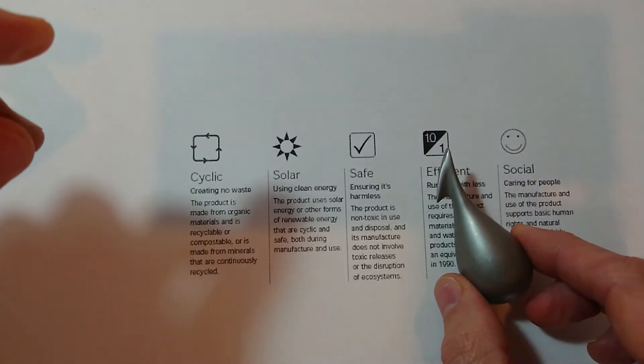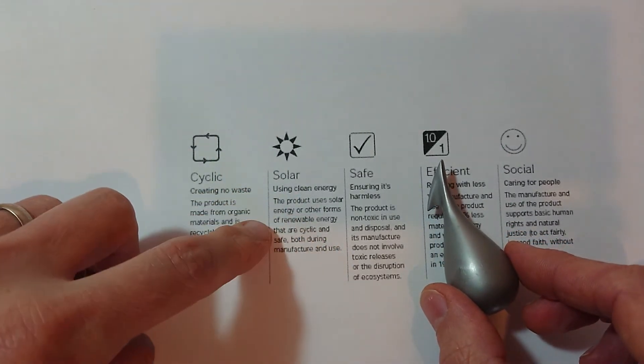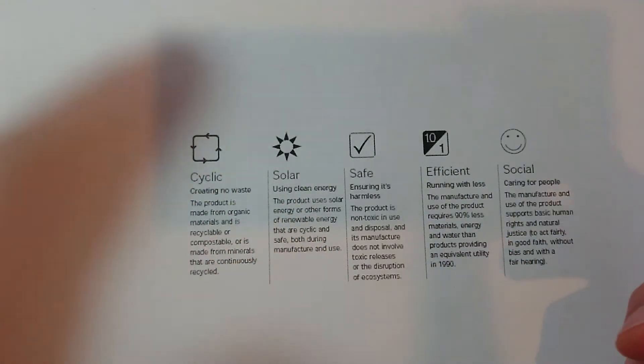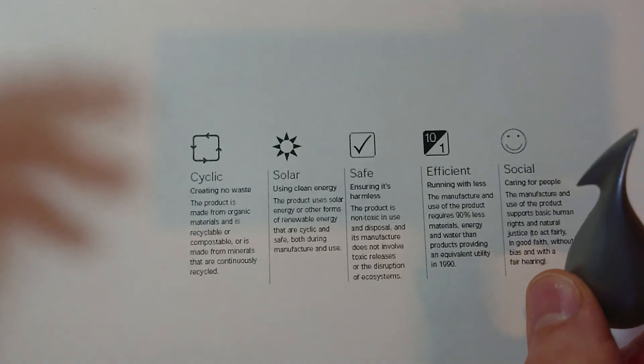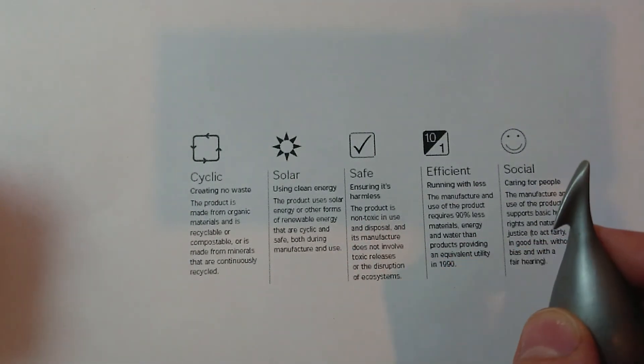So this product here, the downside from Taschewski's five key principles is solar and efficiency because of its manufacture. But other than that, I think it would score quite highly if we scored it across these five different areas.